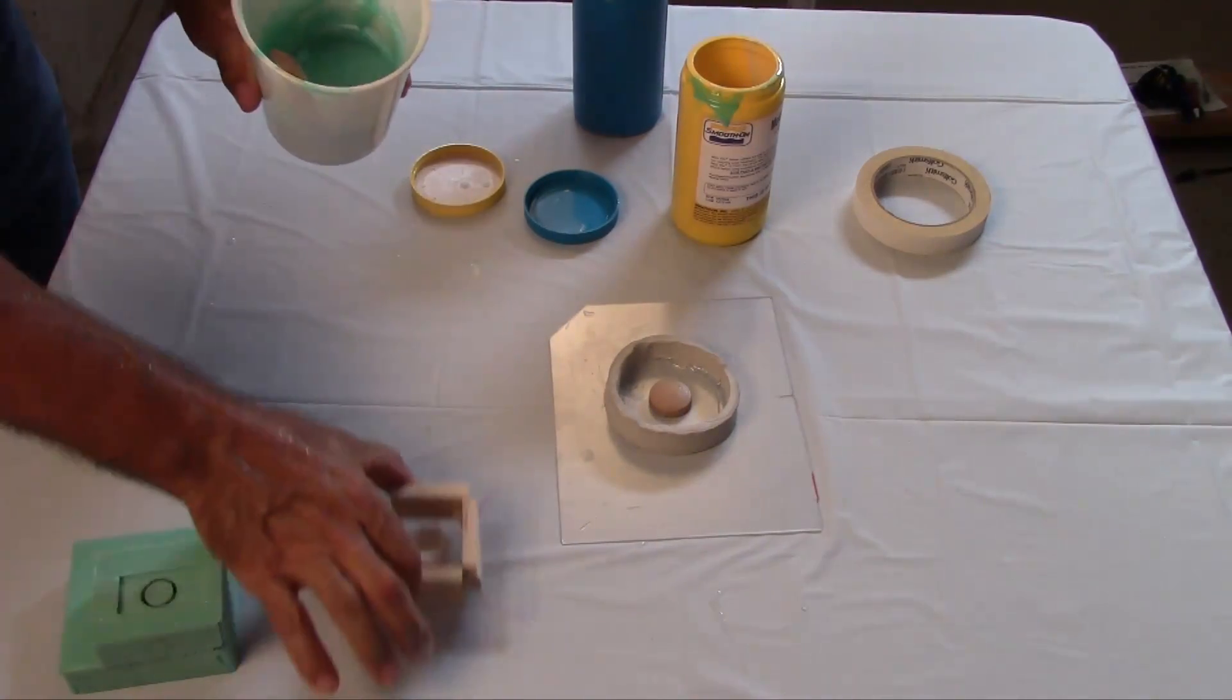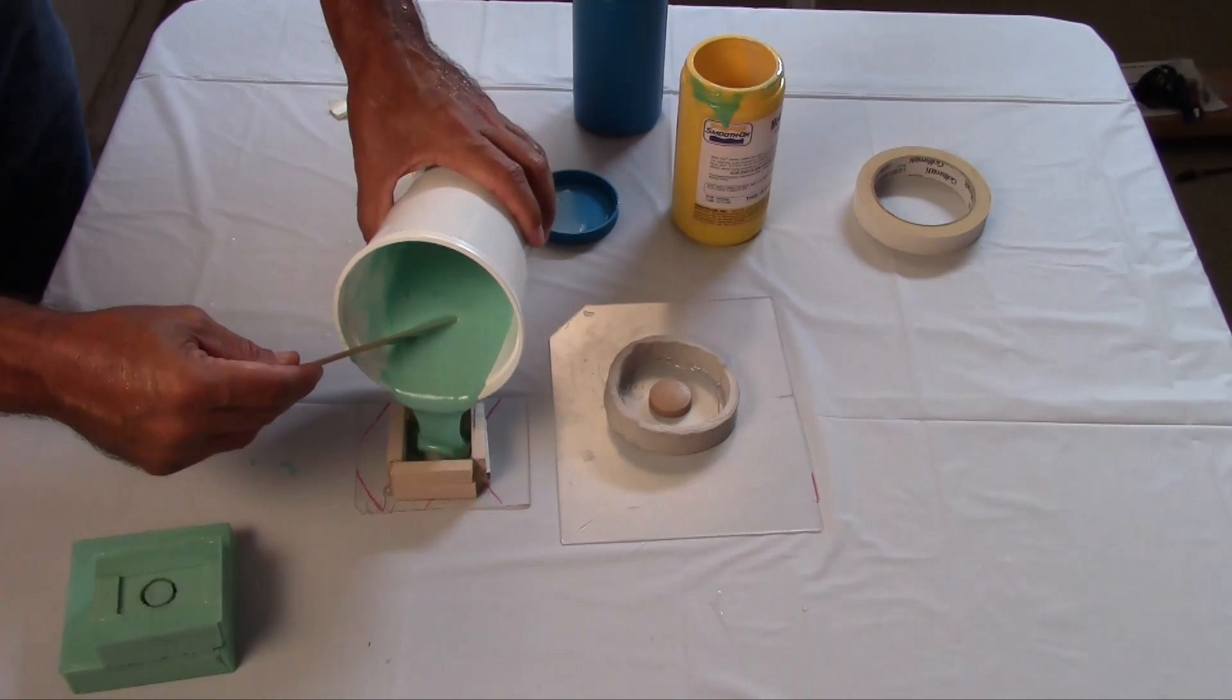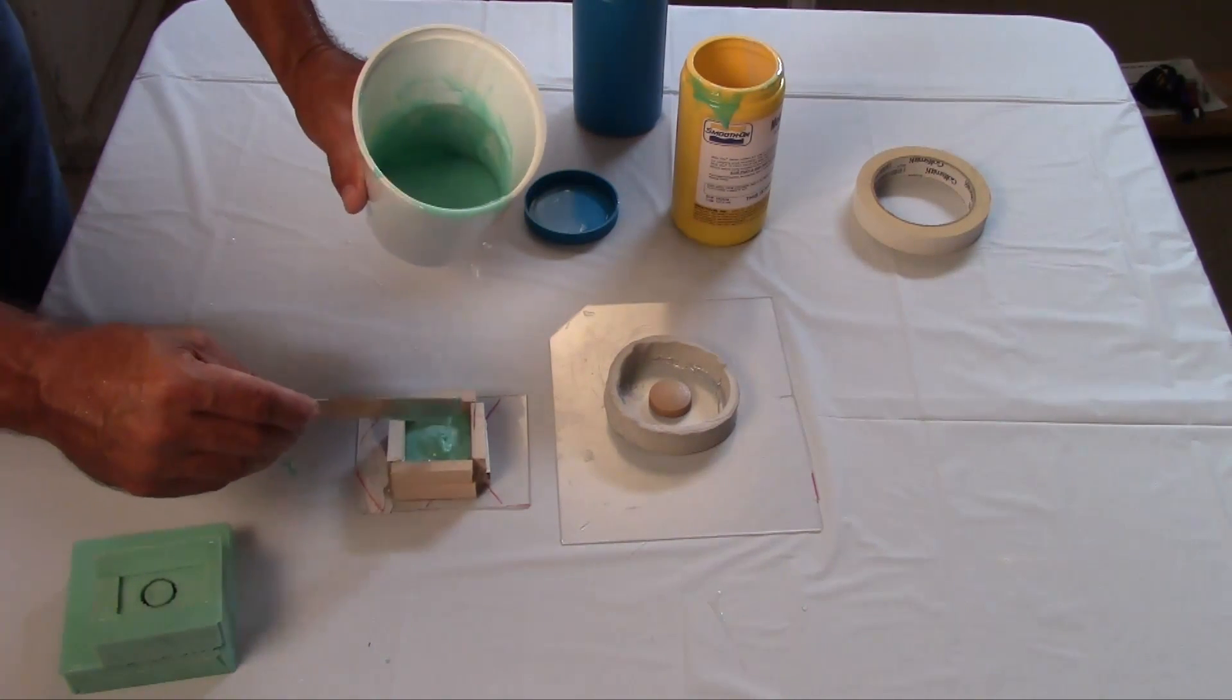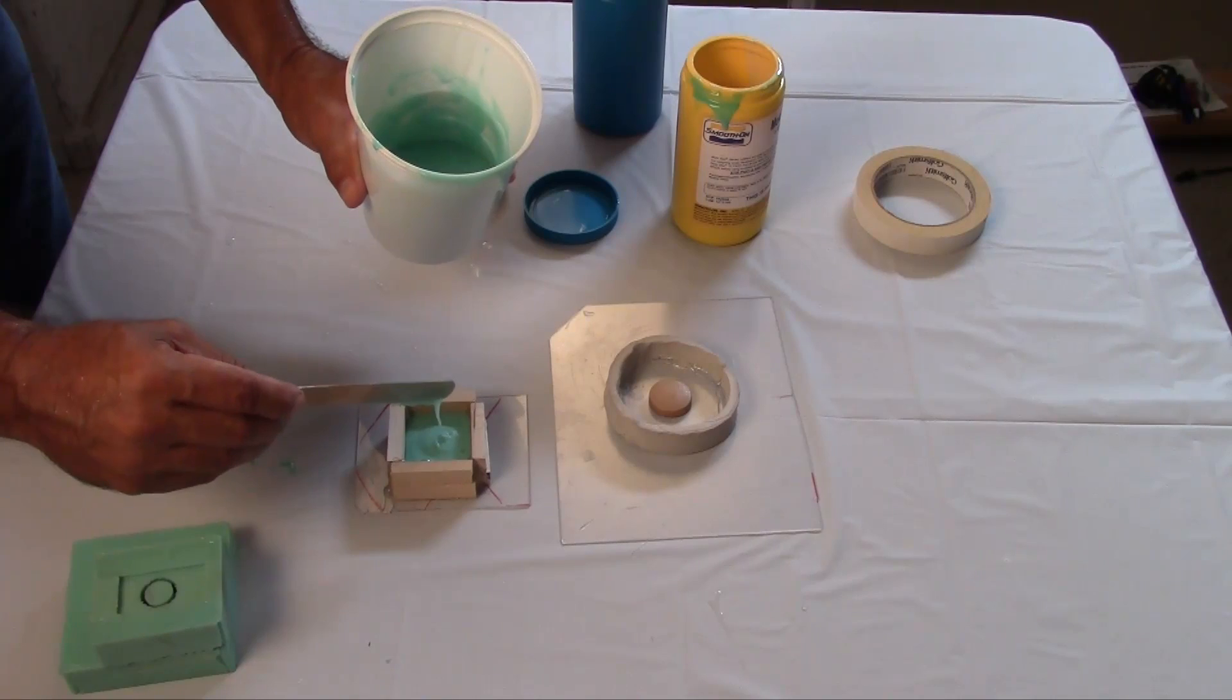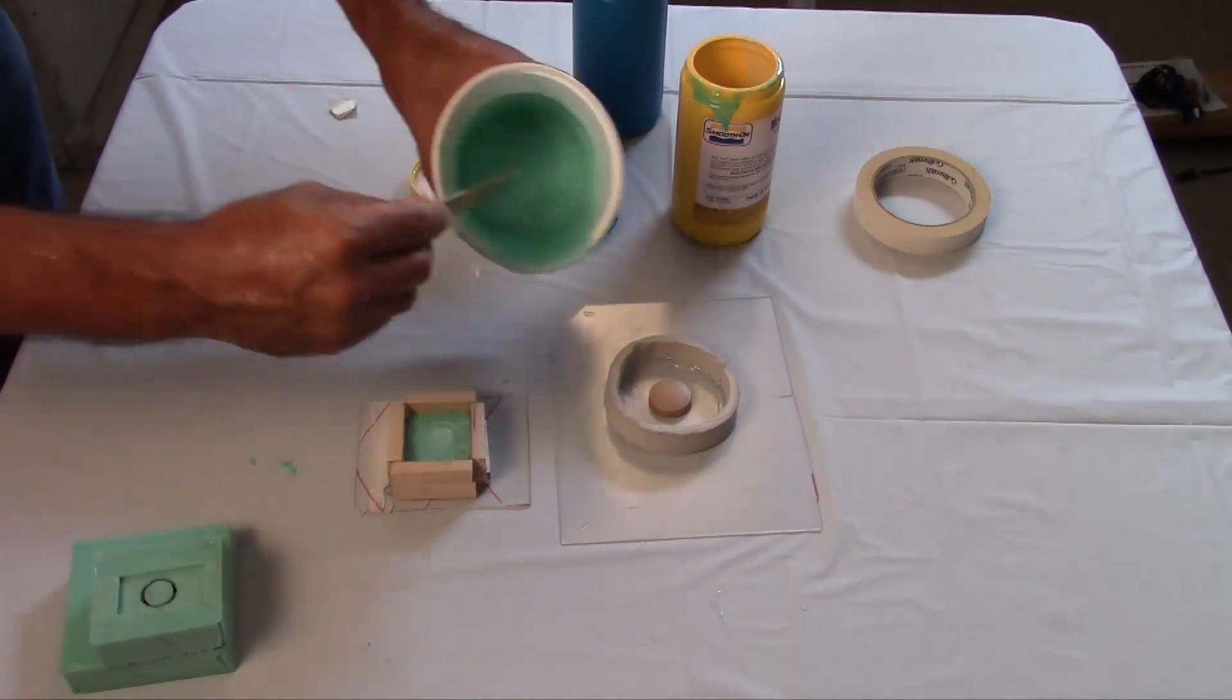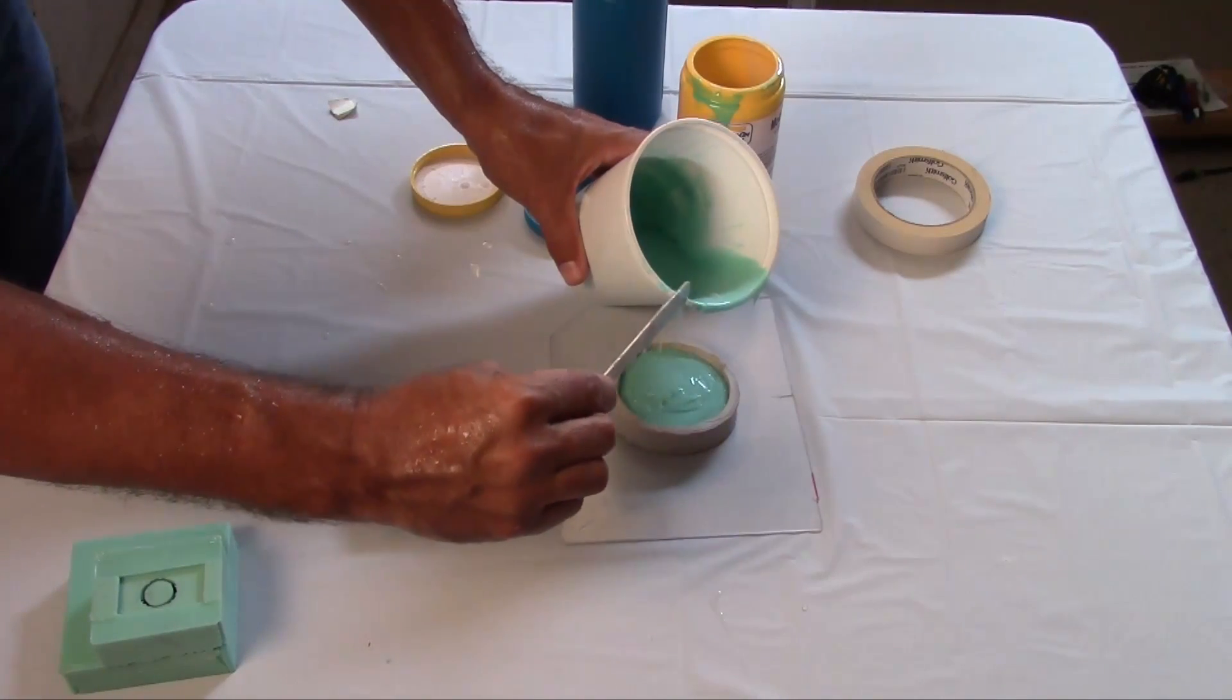So we're going to do the ferrule first. We want to make sure we get everything around there. Around the inside of the part, the outside of the part, that we get good coverage. Looks to be okay so far. I'm going to let that sit for a minute and let some of that bubbling come up. And put some in here for the butt cap.